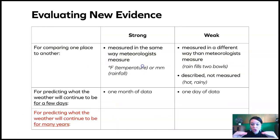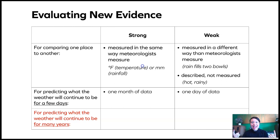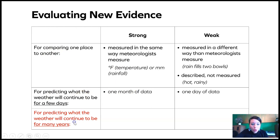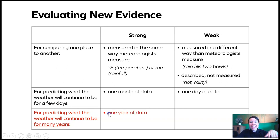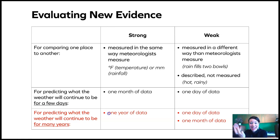We're going to add a new row to the bottom of the evaluating new evidence chart. In chapter two, we were trying to predict what the weather would be for the next few days, and a month of data lets us do that. But now we want to predict what the weather will continue to be for years and years — we need that for the orangutan reserve. So we need one year of data, and now one day and one month are going to be weak evidence.